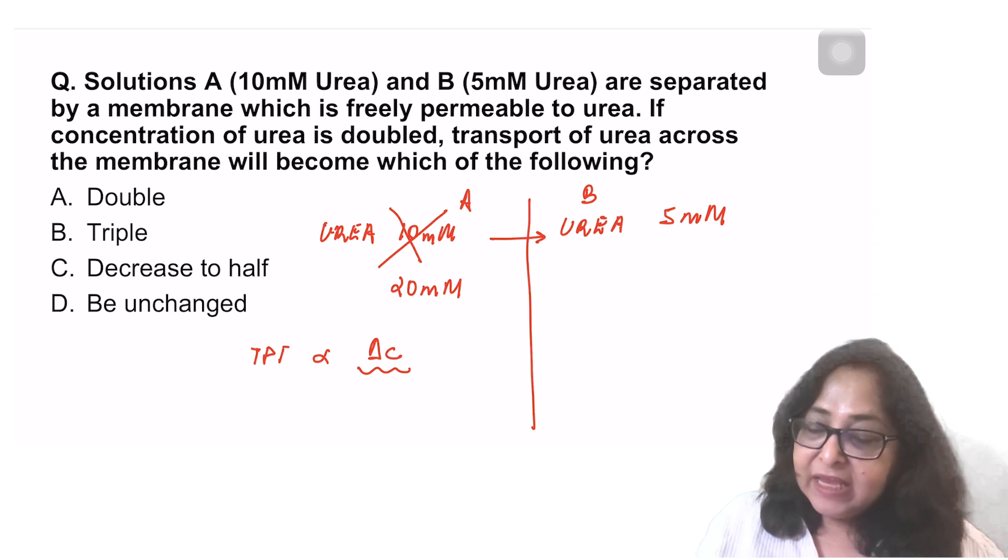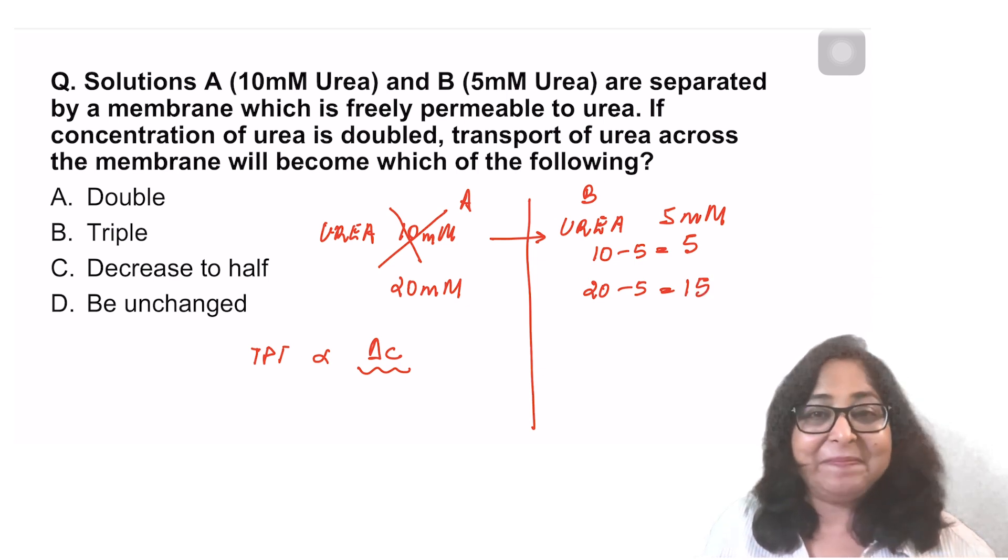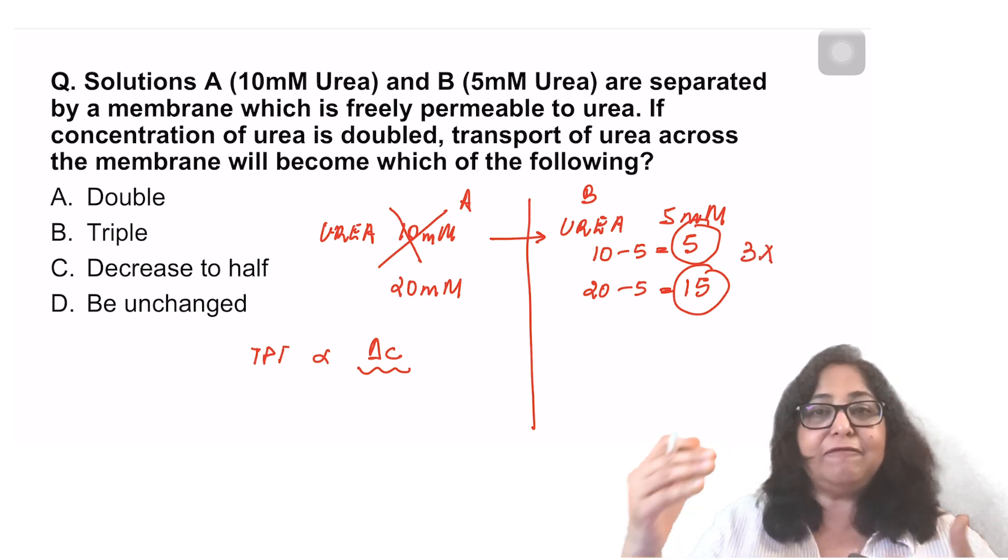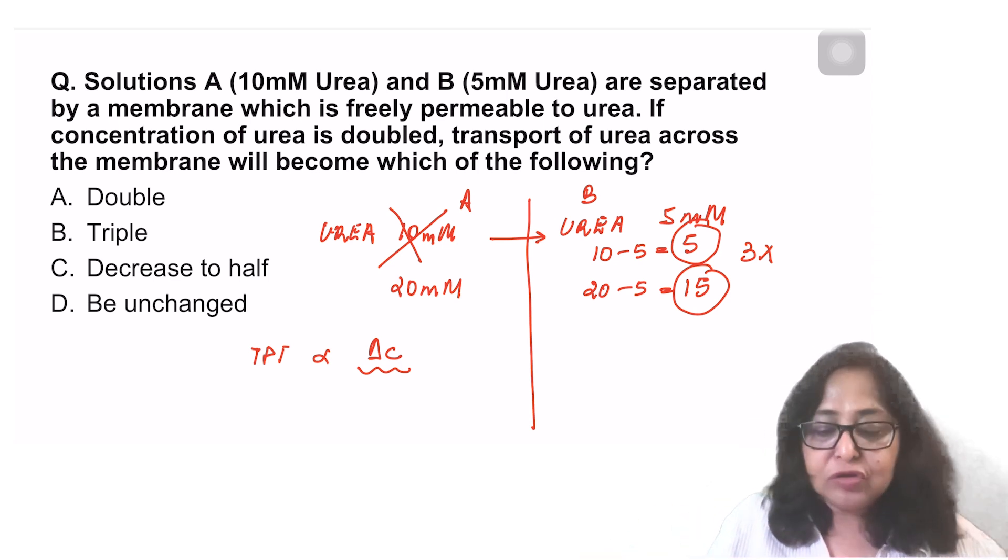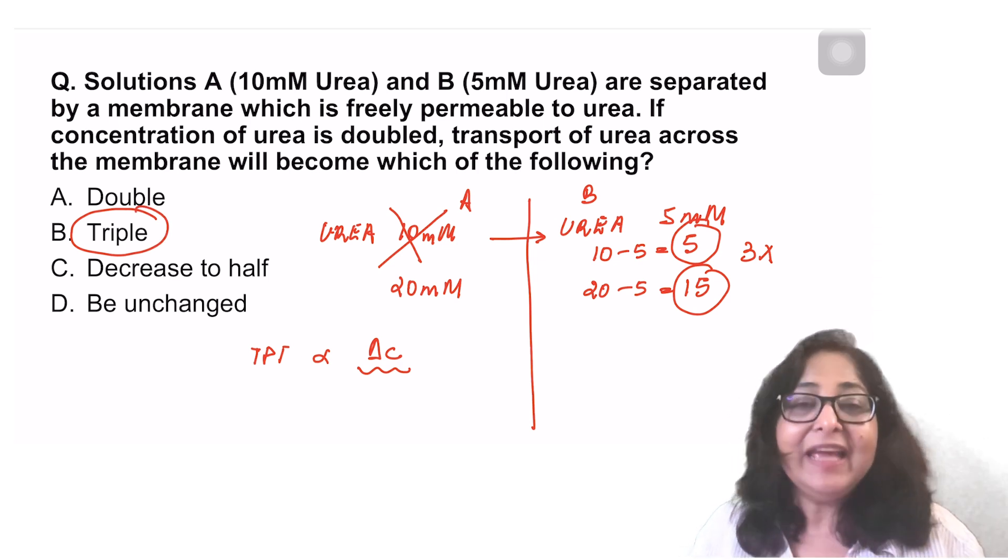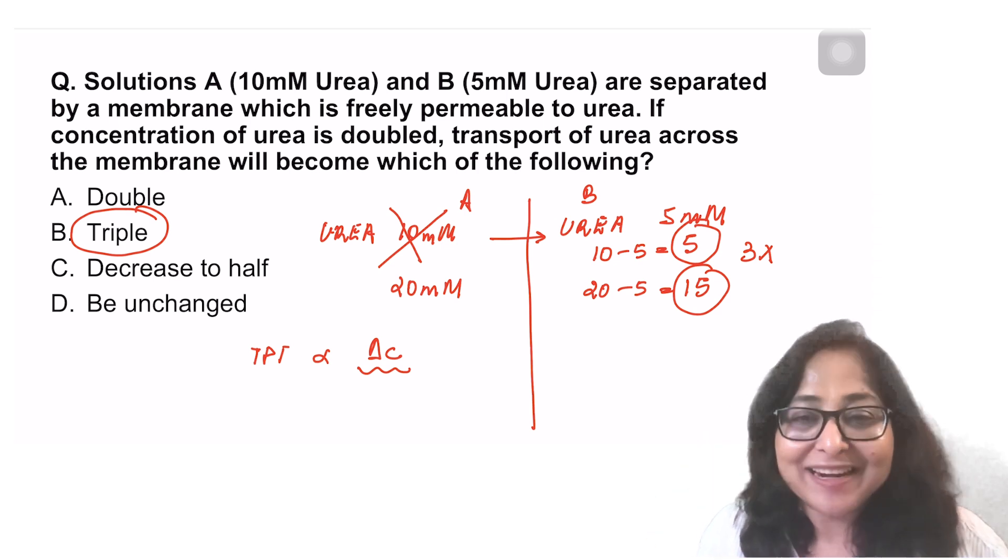If you look at it, in the first situation, when solution A, the urea was 10, in solution B, 5, the gradient was 10 minus 5, which is 5. When urea in solution A becomes 20, the gradient becomes 15. That means there is a three times increase in the gradient. 5 to 15 is a three times increase. So that means the rate of transport will also increase by three times. It will not double. It will increase by three times because please remember, what is important is the concentration gradient.